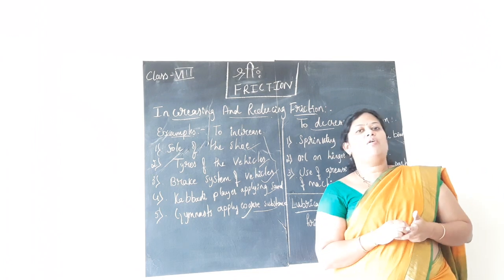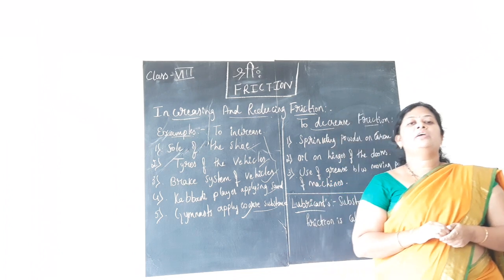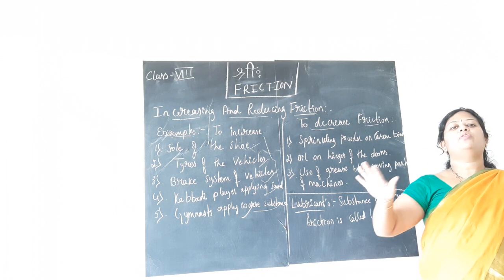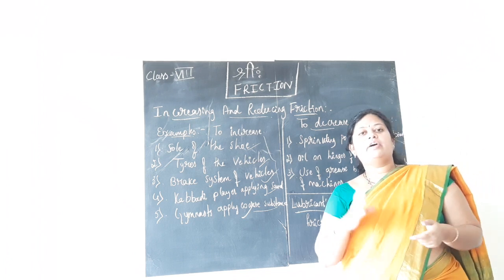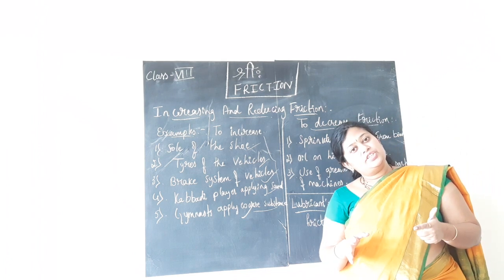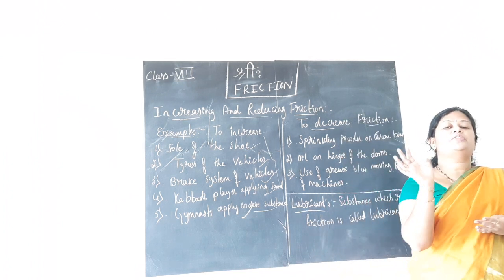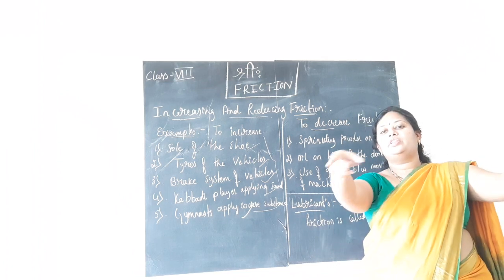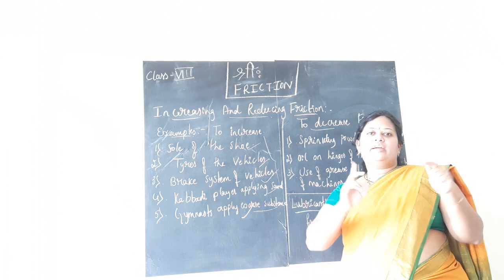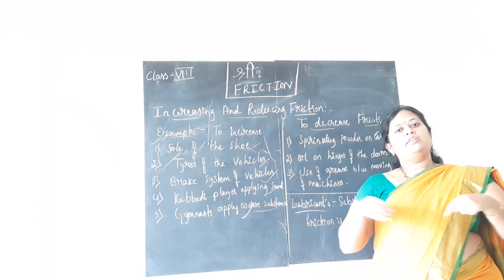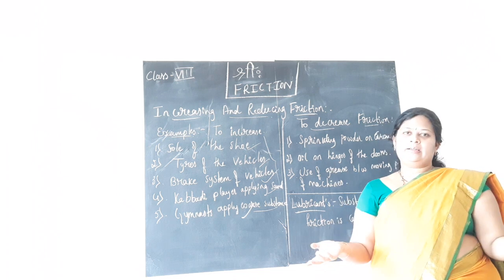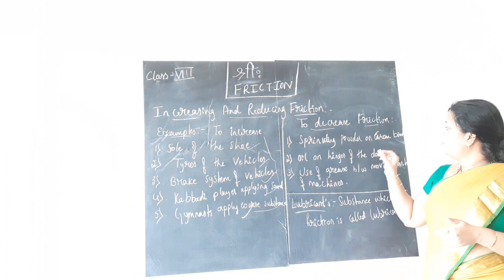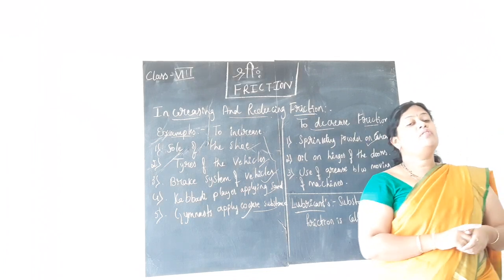Next is sprinkling powder on a carom board. You are all familiar with the carom board — you all play it as well. Before hitting the puck or starting the game, what you do is sprinkle powder on the carom board. This is because we are trying to reduce friction by sprinkling powder, so that when you strike the puck, it will move smoothly towards the pouches and you can score a point. Even if you hit with the striker but the pucks are not moving well, it is of no use. So, in order to reduce friction there, we sprinkle powder on the carom board.